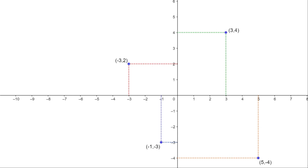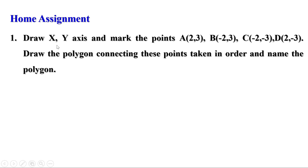Now let us recall what we have learned today. Any point on a plane is represented by a pair of numbers called coordinates. The first number is called the x-coordinate and the second number is called the y-coordinate. To mark the coordinates, we draw two mutually perpendicular lines called the axis of coordinates. The horizontal line is called the x-axis and the vertical line is called the y-axis. Homework: draw x and y axes and mark the points A(2,3), B(-2,3), C(-2,-3), D(2,-3). Draw the polygon connecting these points in order and name the polygon. We can discuss the remaining part in the next video. Till then, bye.